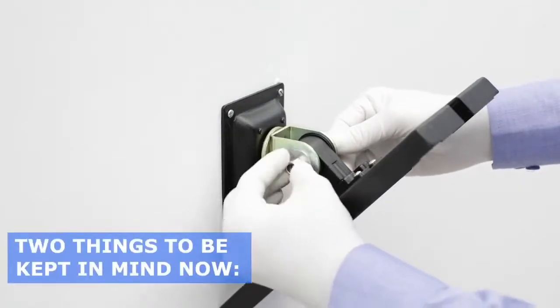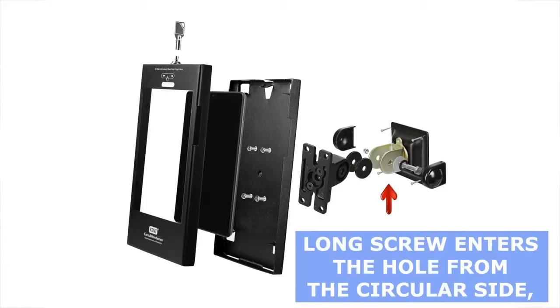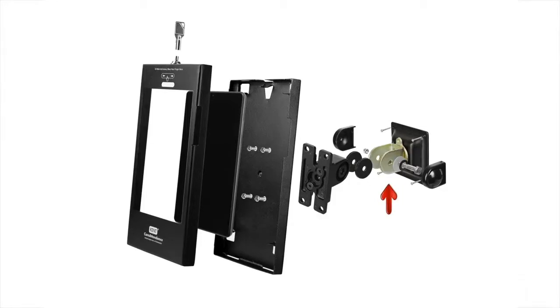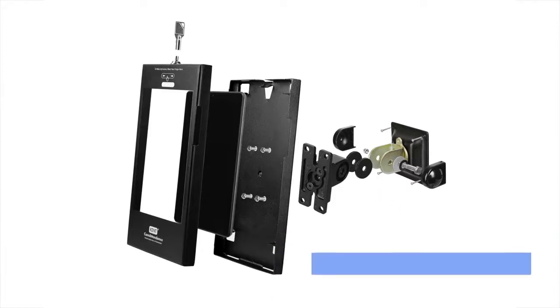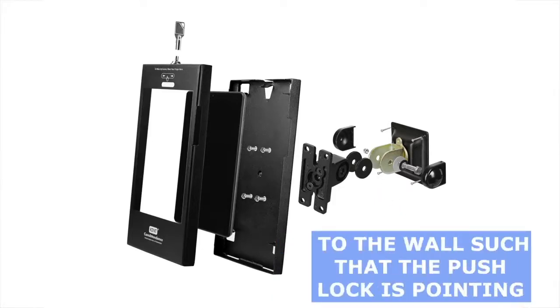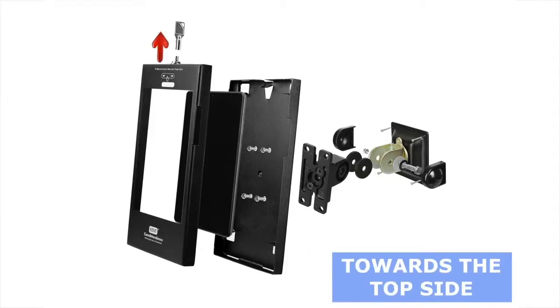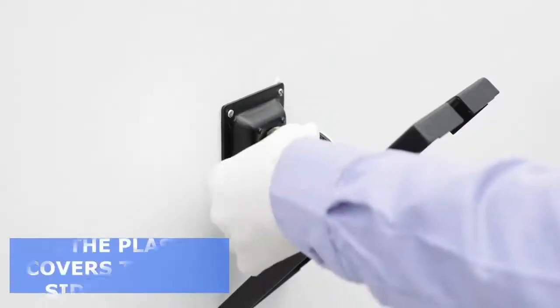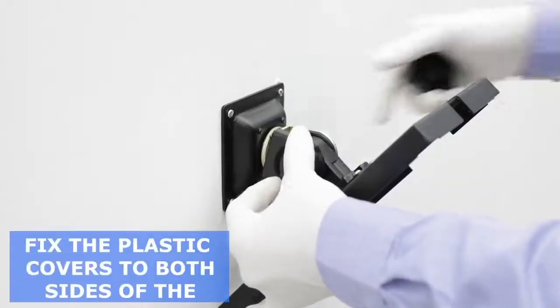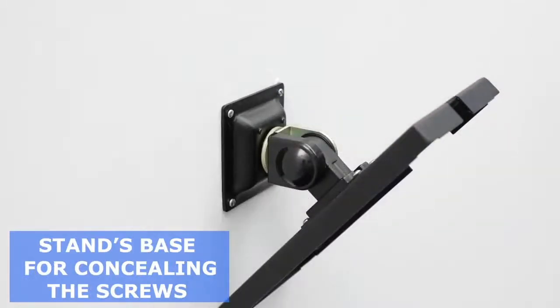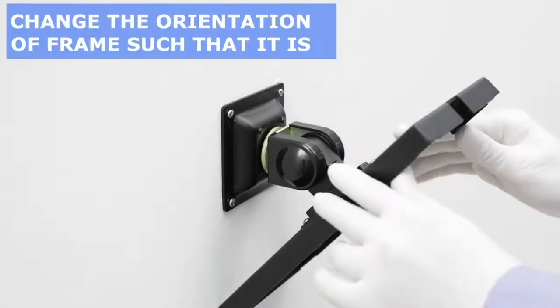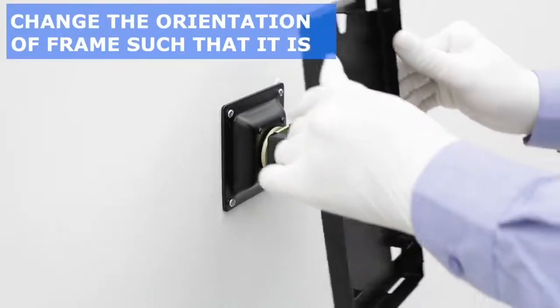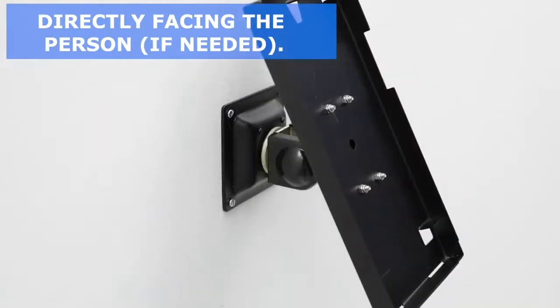Two things to be kept in mind now: A. Long screw enters the hole from the circular side which is opposite to the D-shaped hole. B. Base of the lockable frame gets fixed to the wall such that the push lock is pointing towards the top side. Step 10: Fix the plastic covers to both sides of the stand's base for concealing the screws and fixtures. Step 11: Change the orientation of the frame such that it is directly facing the person, if needed.